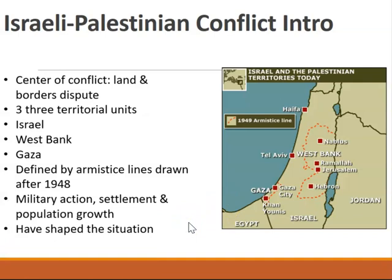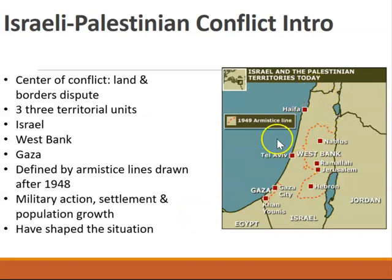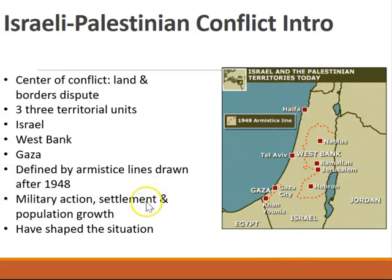It gets complicated, like a lot of things do, especially in the Middle East, over this land. And it's a relatively small piece of land — about the size of the state of New Jersey, all of this land that you see pictured here.